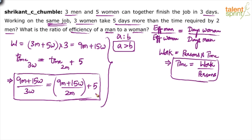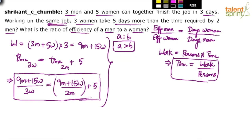Moving on — we have not completed the full algebraic solution because options were not provided. If options are available, just substitute and get the answer. Without options, the approach requires two equations. Here we only formed one equation, since the total work expression alone is not a complete equation — we don't know the absolute value of total work.